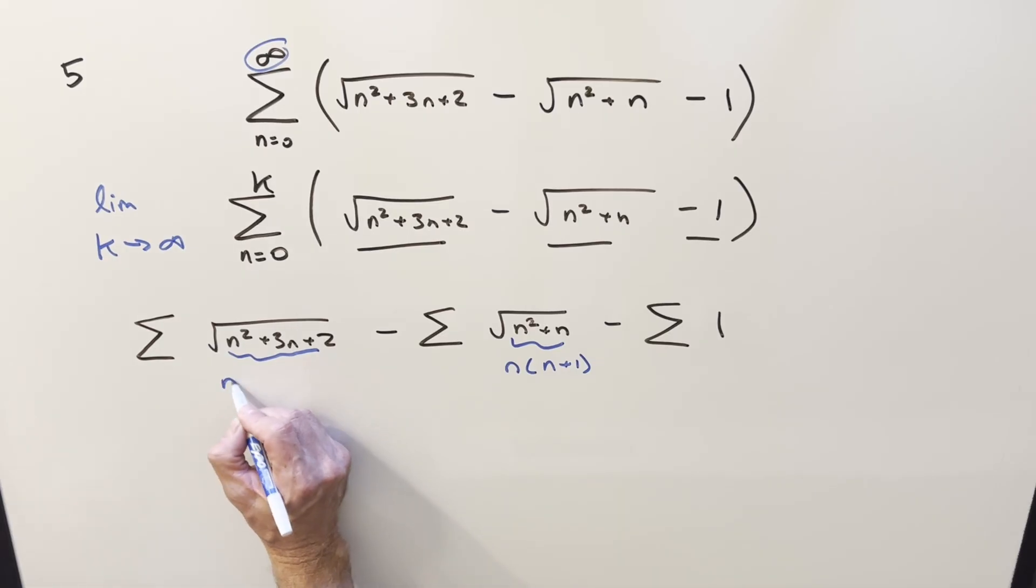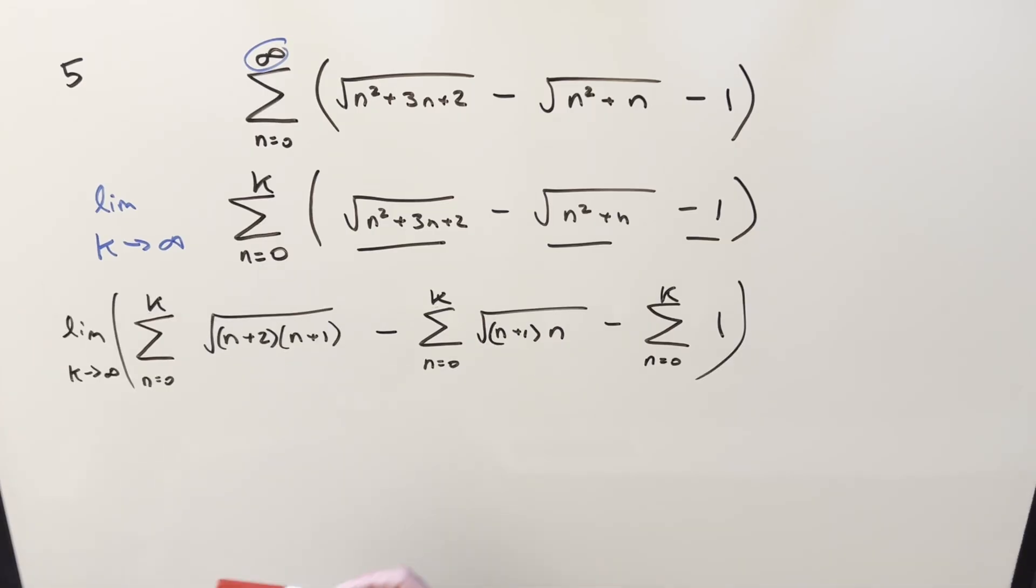And then this one here is going to be n plus two times n plus one. And so then let's just rewrite these two sums factored now. So we can look at it that way. But now with it factored, what we can notice is...